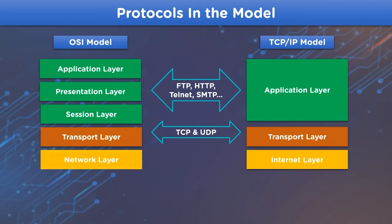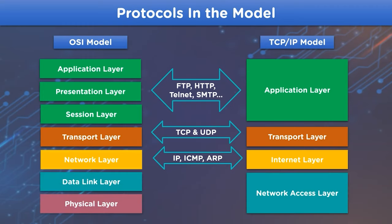The network layer from the OSI model refers to the internet layer in the TCP/IP model, which applies protocols such as IP (Internet Protocol), ICMP (Internet Control Message Protocol), and ARP (Address Resolution Protocol). The data link layer and physical layer from the OSI model refer to the network access layer in TCP/IP. This layer doesn't exactly apply any protocol but is connected through physical media including Ethernet, Wi-Fi, and cables.